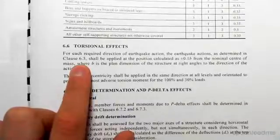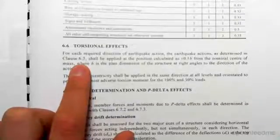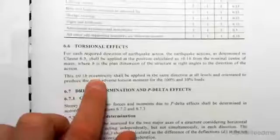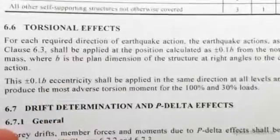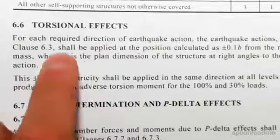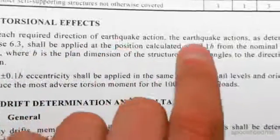If we go to that section, it says that for each required earthquake action, as determined in clause 6.3, the eccentricity shall be applied to the position calculated as 0.1b from the nominal center of mass.